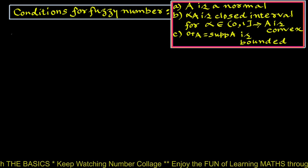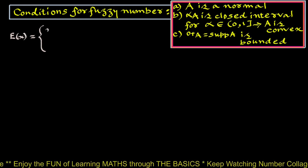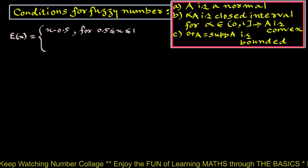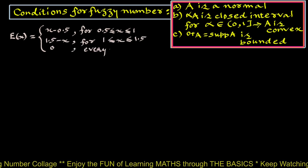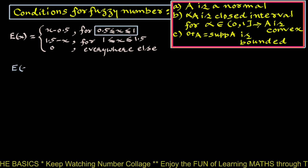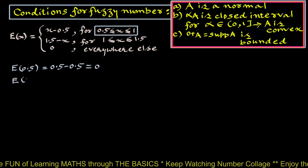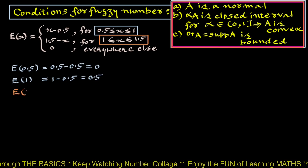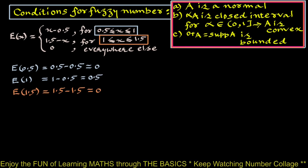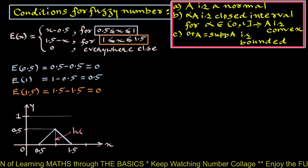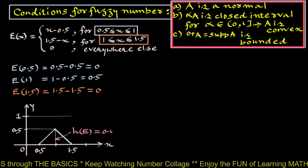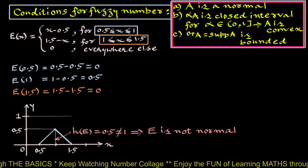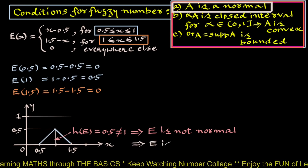Fuzzy set E(x) is defined as (x minus 0.5) for 0.5 less than or equal to x less than or equal to 1, and 0 everywhere else. For the first interval: E(0.5) equals 0 and E(1) equals 0.5. The height of fuzzy set E is 0.5, not 1, which implies E is not normal. The first condition is not satisfied, which implies E is not a fuzzy number.